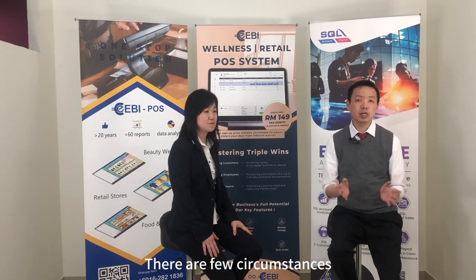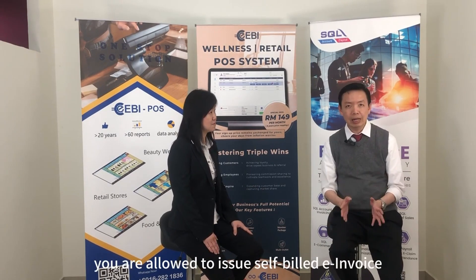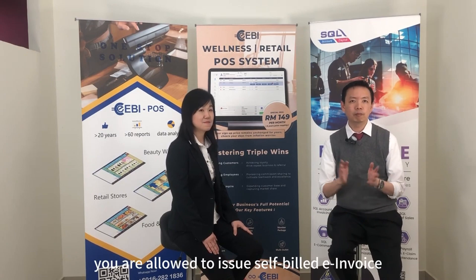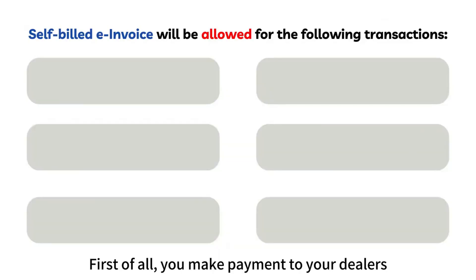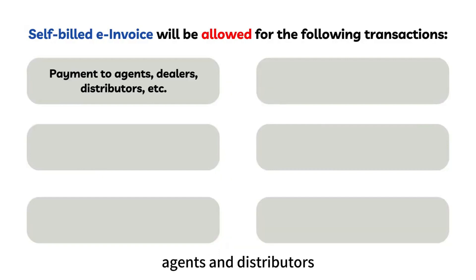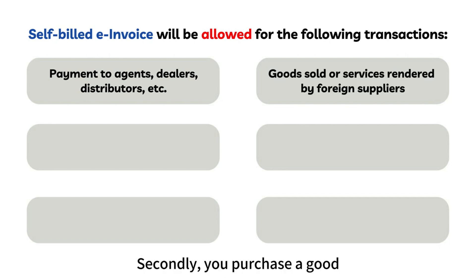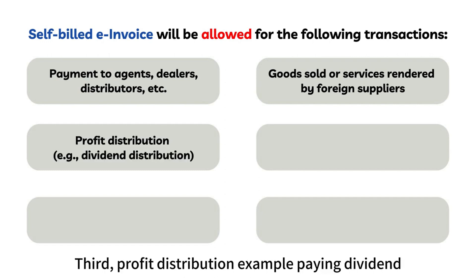Under what circumstances do we have to issue self-bill e-invoice? There are a few circumstances allowed by LHDN. First, you make payment to your dealers, agents and distributors who are not a registered company. Secondly, you purchase goods or services from a foreign country supplier. Third, profit distribution — for example, paying dividend.